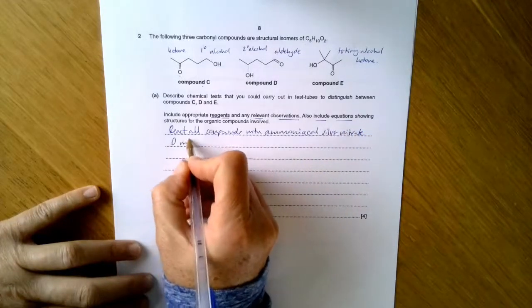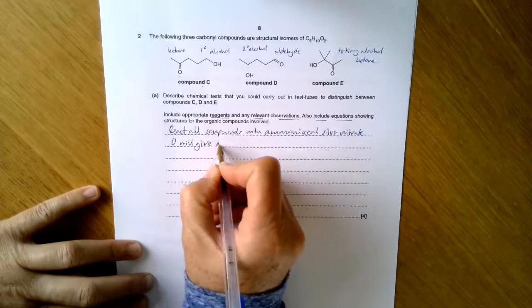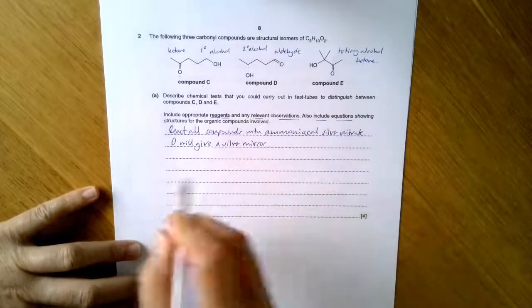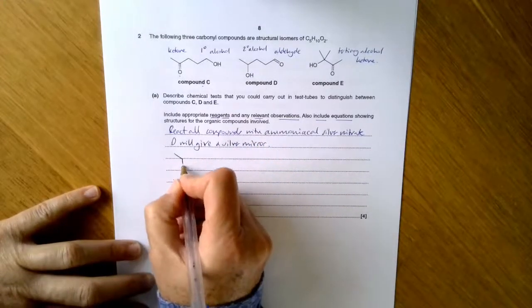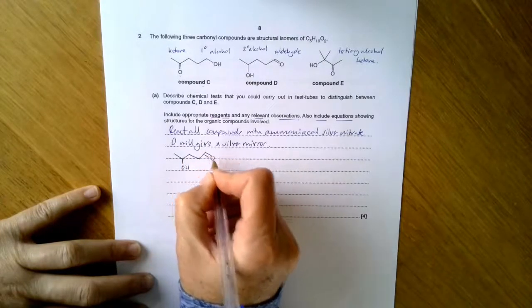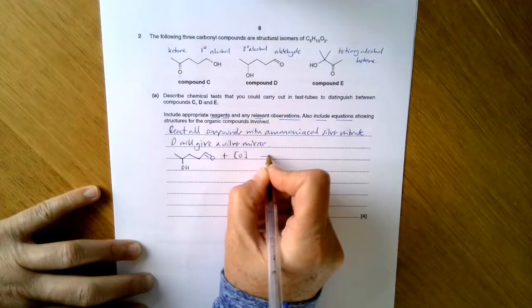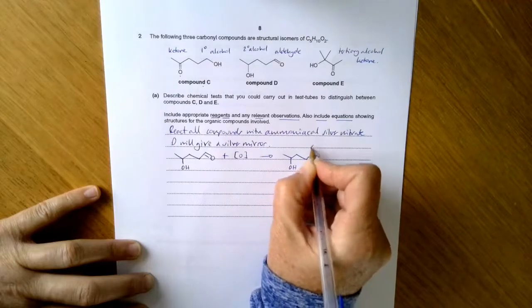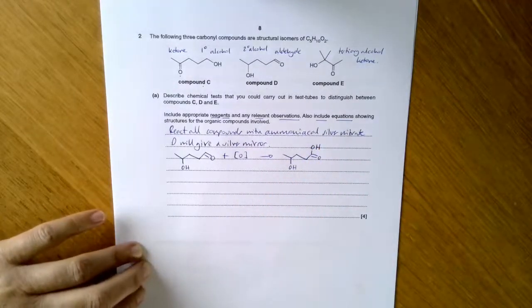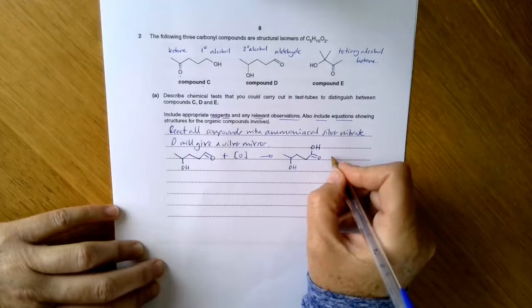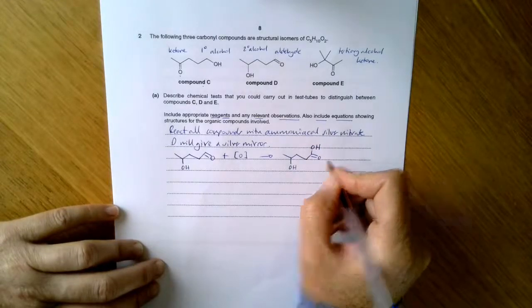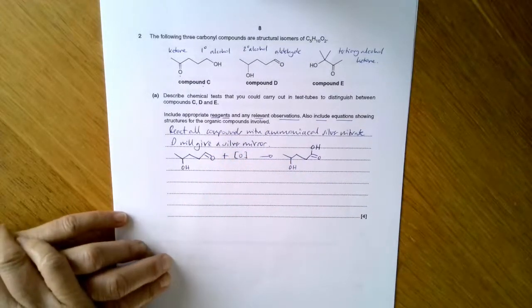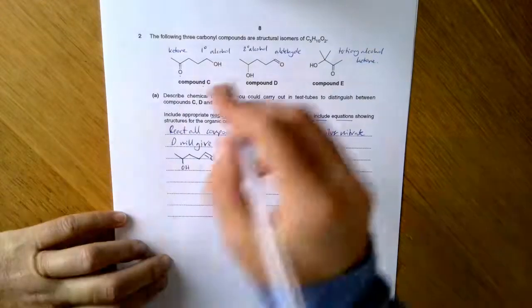And D will give a silver mirror. So that means I've identified D and I've got to give an equation. So let's stick with skeletal formulae because that's what we've been given. This is an oxidation reaction. So we'll make carboxylic acid in that reaction. And we also, because I'm going to oxidise it once, just oxidising it once to make the carboxylic acid. So that's my first positive test. So I've done D.